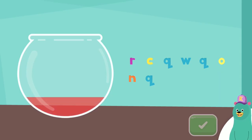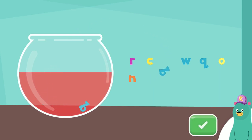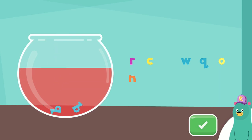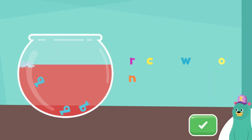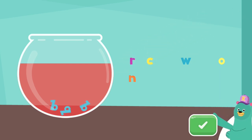Drag the letter Q into the bowl. Drag the letter Q into the bowl. You put the letter Q into the bowl.